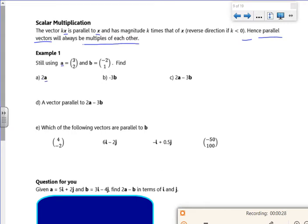So 2a then, it's 2 lots of (3, 2). So all I do is multiply the 2 into it. So 2 times 3 is 6, 2 times 2 is 4.